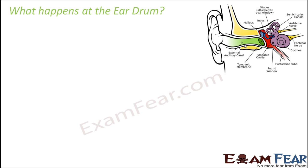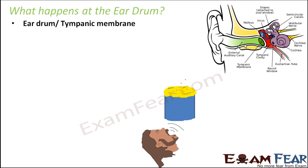Let us see what exactly happens at the eardrum. Take this example — it will help you understand what happens at the eardrum. Suppose you have a can with the top and bottom removed, so it is just a cylinder open from top as well as bottom. Now you take a rubber, a stretchable substance, and cover the top of this can. With a rubber band you tie it up so that it gets stretched — it is like a stretched membrane now.